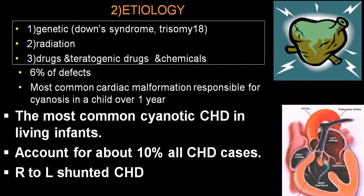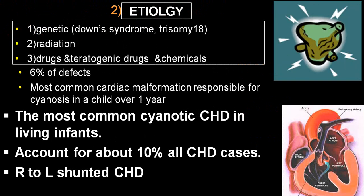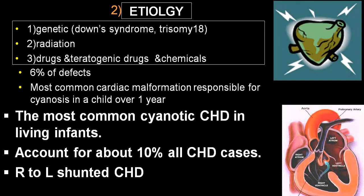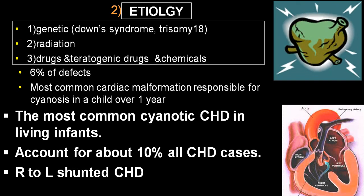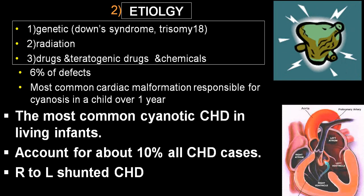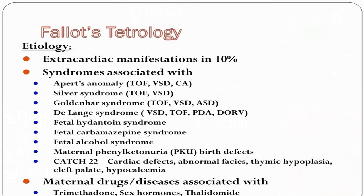Etiology-wise, the most common cause is genetic — Down syndrome or trisomy 18. Other causes include radiation, teratogenic drugs, and chemicals. TOF accounts for approximately 9 percent of congenital heart disease and is the most common cyanotic congenital heart disease. It produces a right-to-left shunt, causing deoxygenated blood to enter the oxygenated side and producing cyanosis.